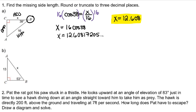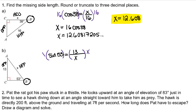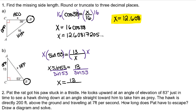For part B, we'll do the same process: circle the focus angle and label the sides to determine which trig function to use to solve for x. I want to use the trig function that deals with opposite and hypotenuse, so I'll use sine. Because x is our denominator, we need to multiply both sides by x before dividing both sides by sine of 53 to isolate x. So x is equal to 13 divided by sine of 53.